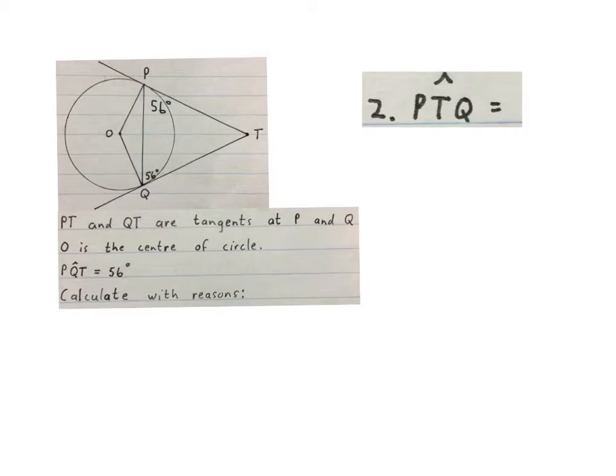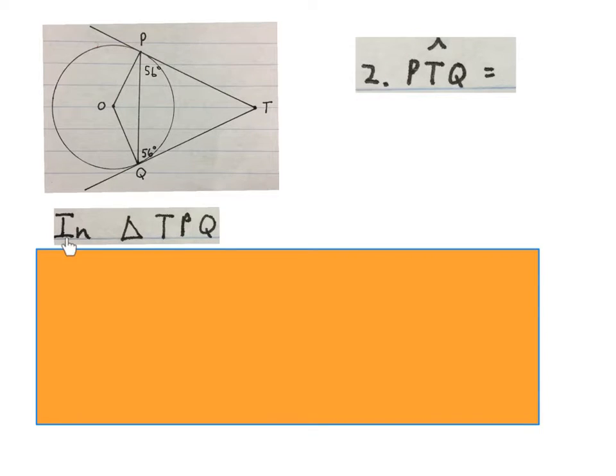The next question they ask me is to work out the angle PTQ. Finger on P, move to T, P to T, Q, that angle at T. So we start again. In triangle TPQ, TPQ back to T, that triangle.